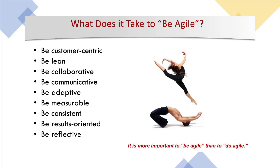You should always be consistent — for example, if you deliver software 10 days before the delivery date one month and then 10 days after the next month, that is not consistent. Consistency means always delivering before the set date, with high-value, defect-free software. You should also be results-oriented and reflective. By changing yourself, you inspire others to change. If individuals and the enterprise embrace all these concepts, they are called Agile — and the enterprise that follows all of these is called an enterprise Agile organization.